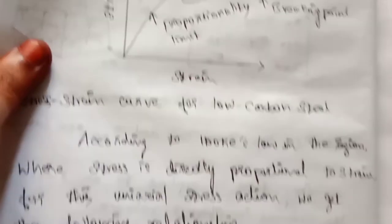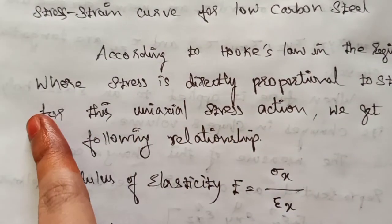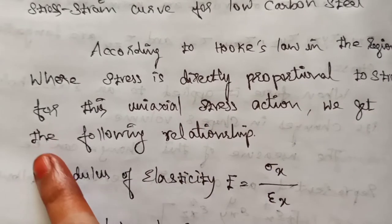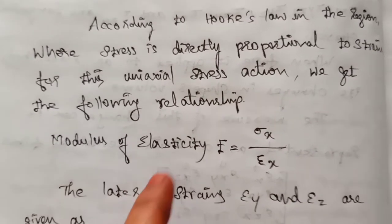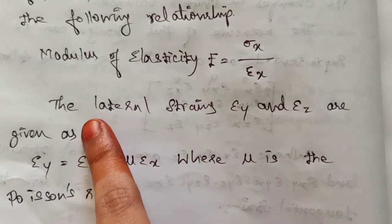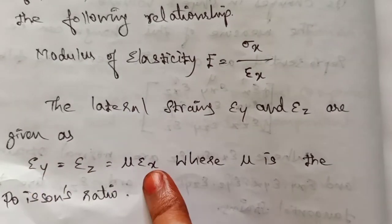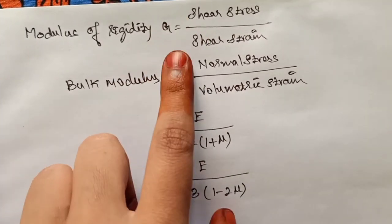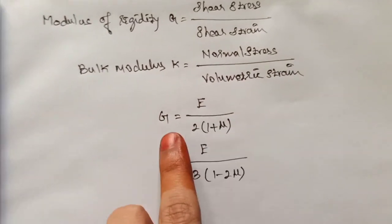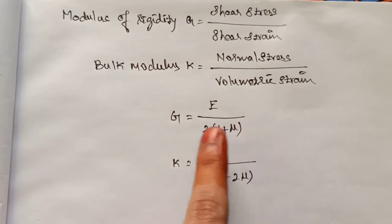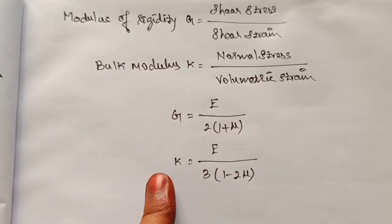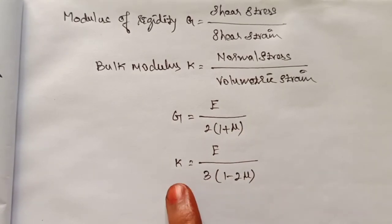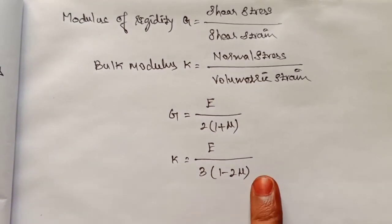Hooke's law states that stress is directly proportional to strain. From this uniaxial stress condition we get the following relationships: Young's modulus (modulus of elasticity) E = stress / strain. Lateral strains in y and z directions are given using Poisson's ratio (mu). Modulus of rigidity G = shear stress / shear strain, and G = E / (2(1 + mu)). Bulk modulus K = normal stress / normal strain, and K = E / (3(1 − 2mu)).